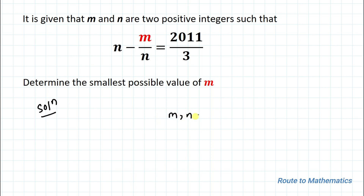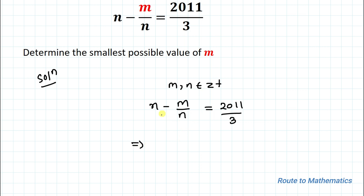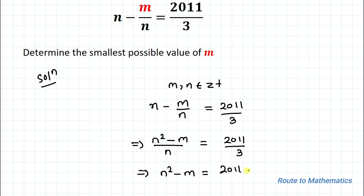We are given that m and n are positive integers and that n minus m divided by n equals 2011 divided by 3. Taking the LCM, we get n squared minus m equals 2011 divided by 3.